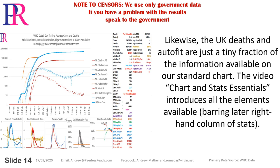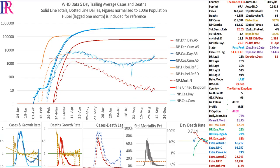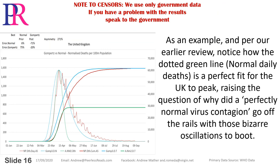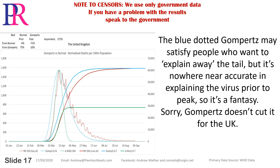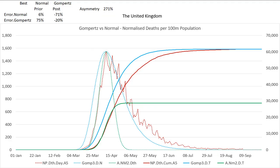Even that would still be massively higher than the Far East, but it shows why critical review of the chart is essential. Likewise, the UK deaths and autofit are just a tiny fraction of the information available on our standard chart. As an example, notice how the dotted green line — normal daily deaths — is a perfect fit for the UK to peak, raising the question of why did a perfectly normal virus contagion go off the rails with those bizarre oscillations. The blue dotted Gompertz may satisfy people who want to explain away the tail, but it's nowhere near accurate prior to peak. So it's a fantasy. Gompertz doesn't cut it for the UK.